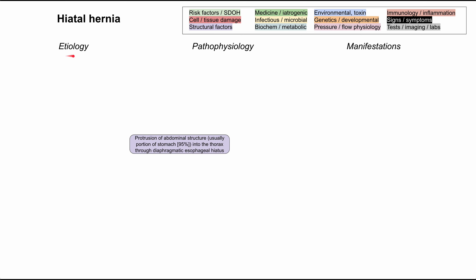Now we're going to work our way back to the etiologies of hiatal hernia. There are two major things that contribute to hiatal hernias. First, you can have a lax diaphragmatic esophageal hiatus — that opening is weak, not as tight as it should be. Secondly, you can have increased intra-abdominal pressure, and that can come from a variety of causes.